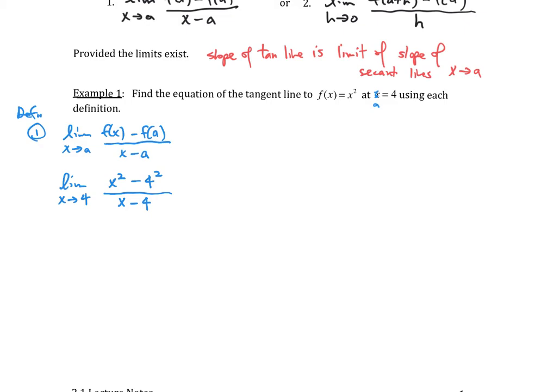The numerator is a difference of two squares. When I factor the numerator, it's going to be x plus 4 times x minus 4. The denominator is divided by x minus 4. We can cancel one of the factors in the numerator with the denominator, and we end up with the limit as x goes to 4 of x plus 4.